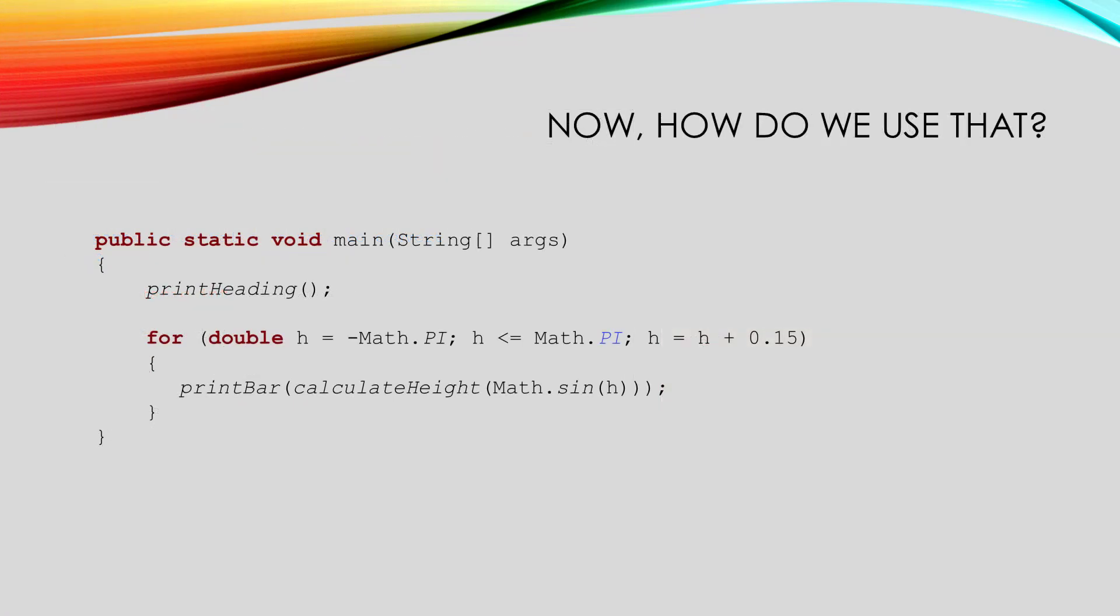All that's left is to change our main method to make the graph curvy. Our main method prints out the header, but we need to change the part that was printing out that diagonal line. Java gives us a method to help. Math.sine takes an argument that is a real number and returns the value of the sine function. Since we want our graph to start and end at 0, and I know the sine of negative pi and sine of pi are 0, we're going to use a loop whose loop variable h starts at negative pi and goes to positive pi. For each value of h, we're going to pass it to the sine function. That call will evaluate to a real number between negative 1 and 1. We're going to pass that into calculate height to convert it to a number of spaces. And then we pass calculate height, which evaluates to that number of spaces it calculated, into print bar to print that line of the function.